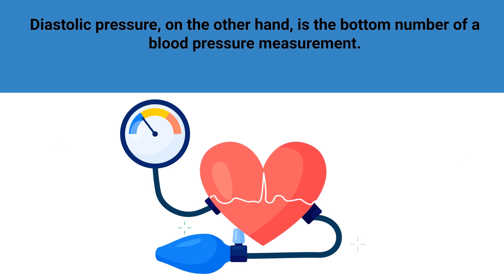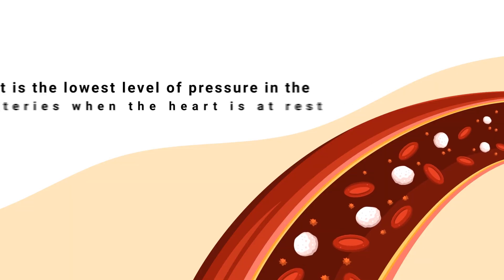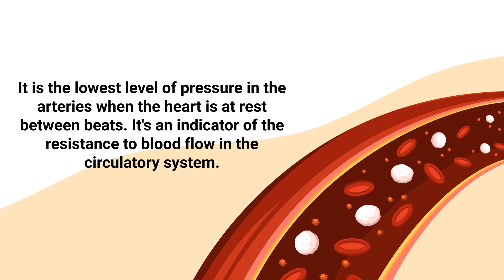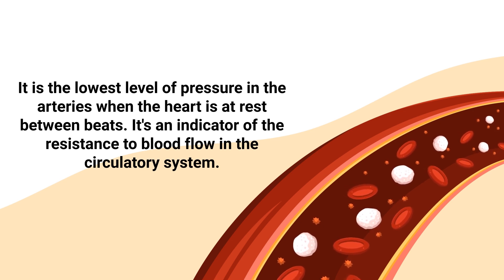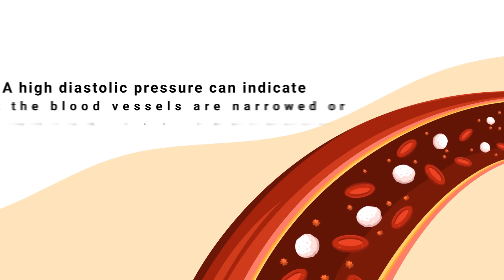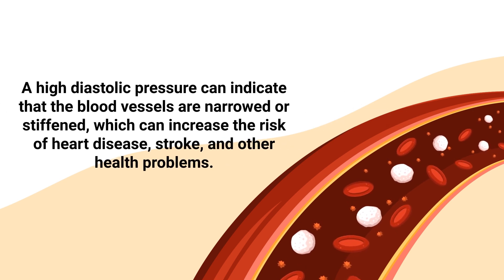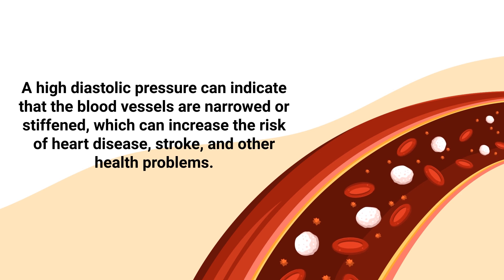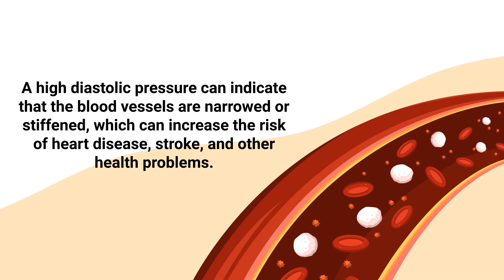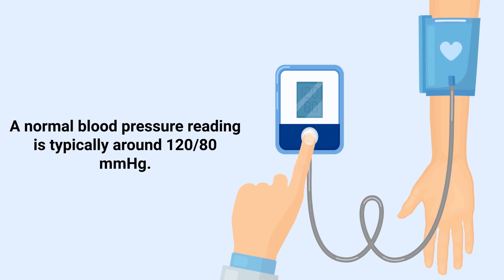Diastolic blood pressure, on the other hand, is the bottom number of a blood pressure measurement. It's the lowest level of pressure in the arteries when the heart is at rest between beats. It's an indicator of the resistance to blood flow in the circulatory system. A high diastolic pressure can indicate that the blood vessels are narrowed or stiffened, which can increase the risk of heart disease, stroke, and other health problems.